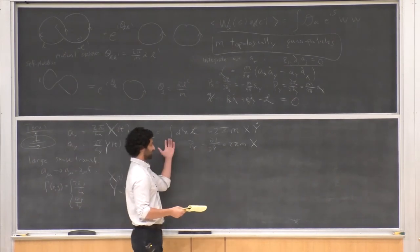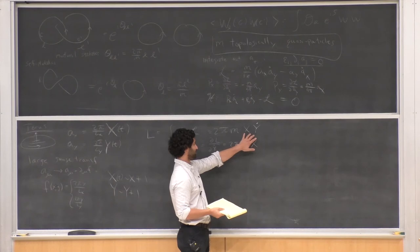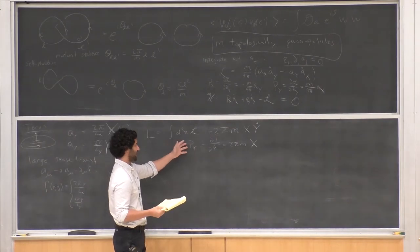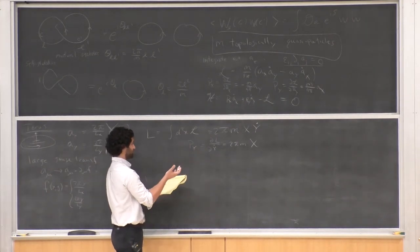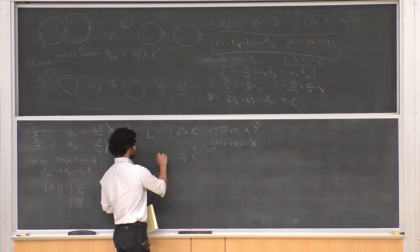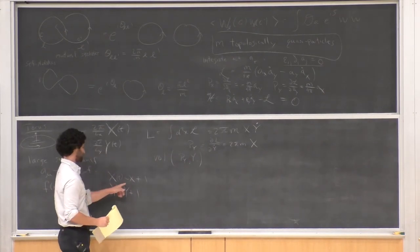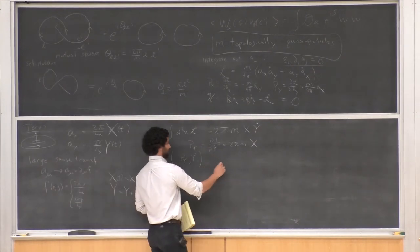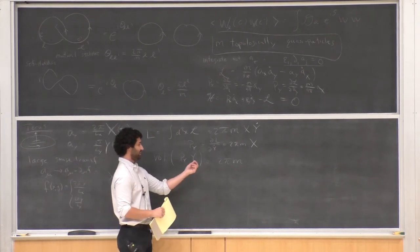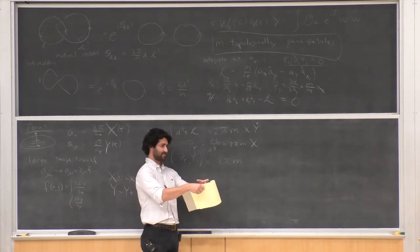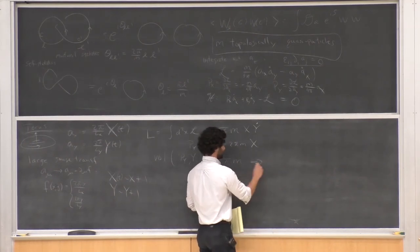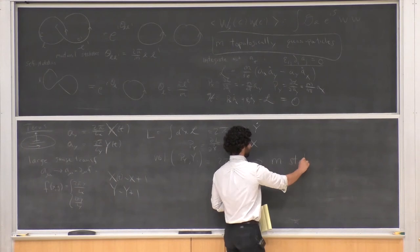The volume of phase space — in P_Y and Y — is finite. X goes to X+1 and Y goes to Y+1, so the volume of phase space is 2πM. When you quantize a theory, for every 2π unit of phase space you have one quantum state. This directly tells you that there are M states in the Hilbert space.